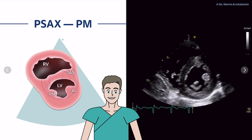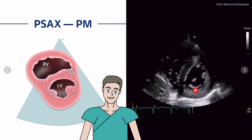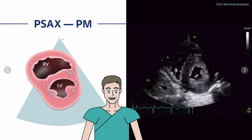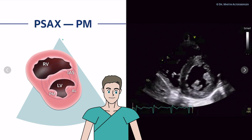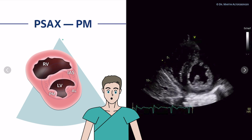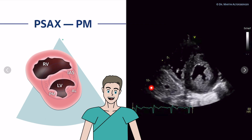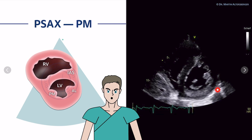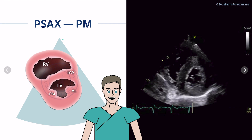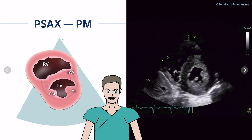Moving on to the papillary muscles: this is a loop showing a thickened myocardium and thickened papillary muscles, which can be used to measure the interventricular septum and posterior lateral wall thickness for LVH assessment. We also see the right ventricle, the tricuspid valve, and even parts of the liver. Always keep in mind that the hyperechoic line is the pericardium, and pericardial effusion surrounding the left ventricle can be nicely seen in this view.